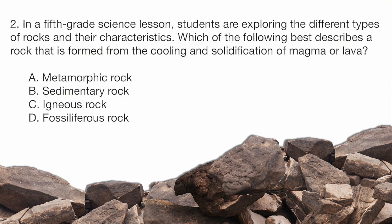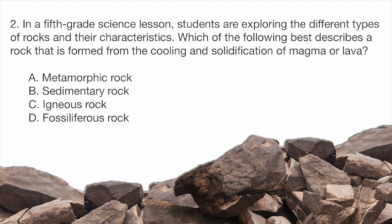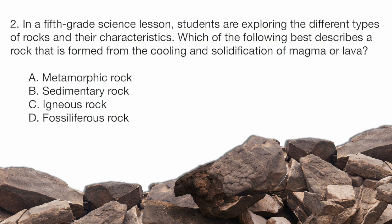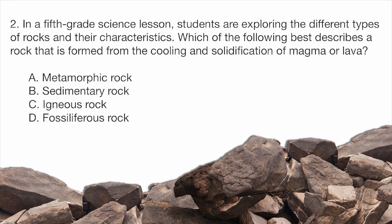Question two. In a fifth grade science lesson, students are exploring the different types of rocks and their characteristics. Which of the following best describes a rock that is formed from the cooling and solidification of magma or lava? A, metamorphic rock. B, sedimentary rock. C, igneous rock. Or D, fossiliferous rock.